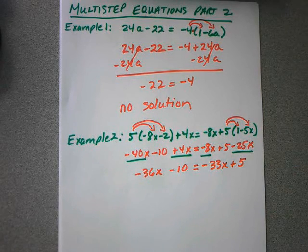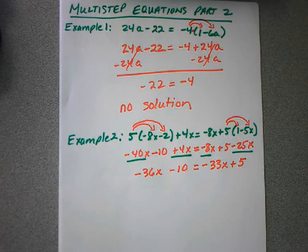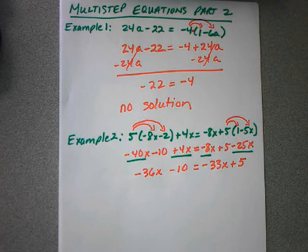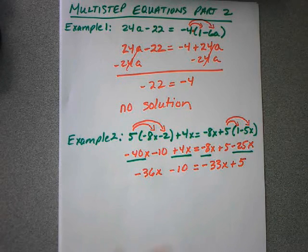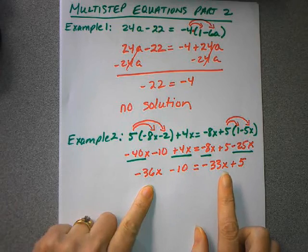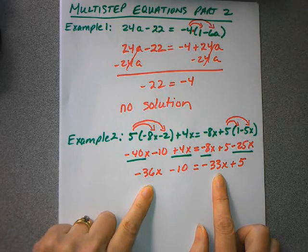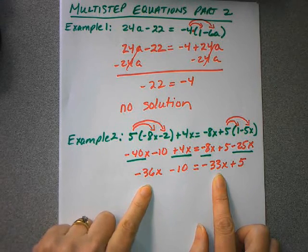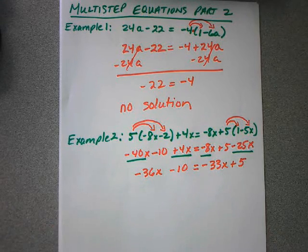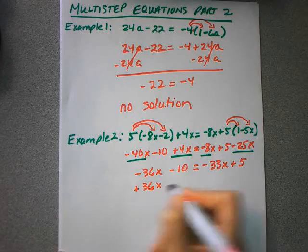Now, you can get rid of any term you want, like I said in the previous video. But again, I suggest getting rid of the smallest variable term. So the question is, is the negative 36 smaller or is the negative 33 smaller? Remember that with negatives, this is going to be the smaller negative. It's further left on the number line. So I am going to add 36x to both sides.